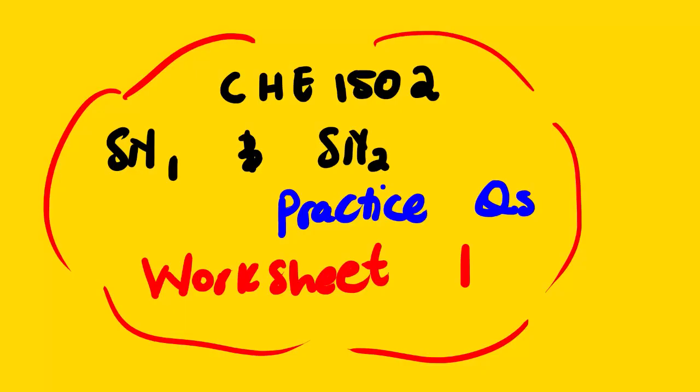Today's lesson covers Chemistry 1502, looking at SN1 and SN2 practice questions. We will be using worksheet number one from the SJ Bakula tutorials for this topic. The worksheets were compiled using past papers, and we will randomly choose questions, give answers, and explain how we arrived at each answer.